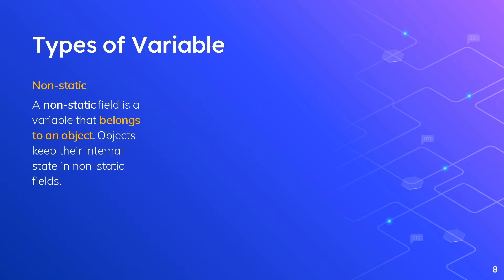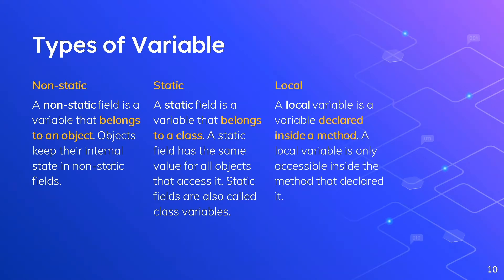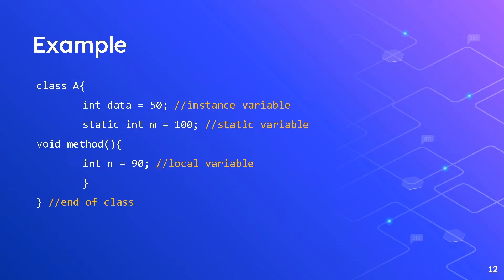Next are the types of variables. We have four types. The first is a non-static field — a variable that belongs to an object. The second is a static field — a variable that belongs to a class. The third is a local variable — a variable declared inside a method. The last is a parameter — a variable that is passed to a method when the method is called. Remember: non-static belongs to an object, static belongs to a class, local is declared inside a method, and parameter is passed to a method.